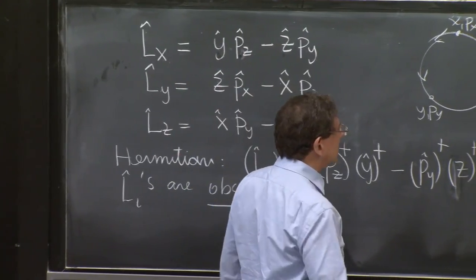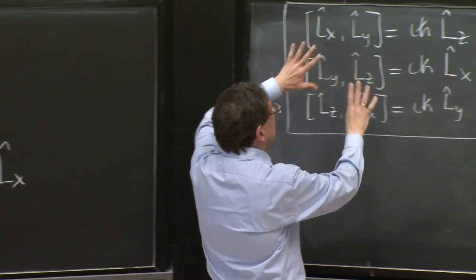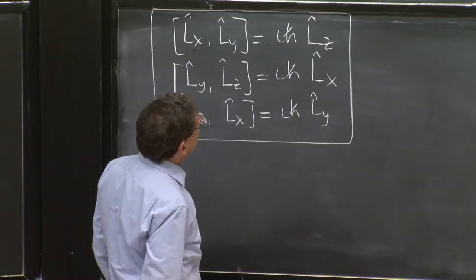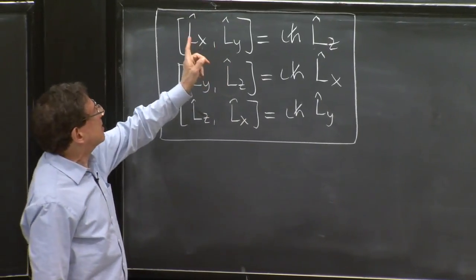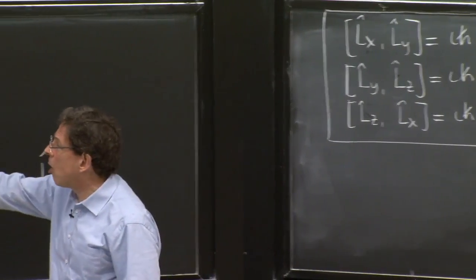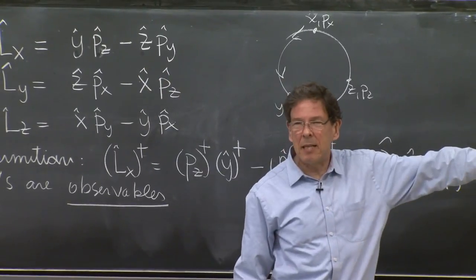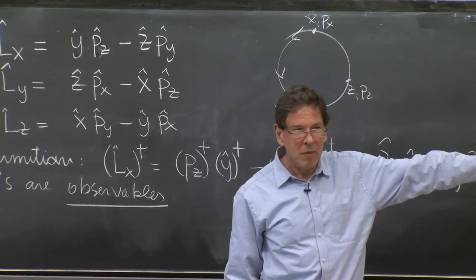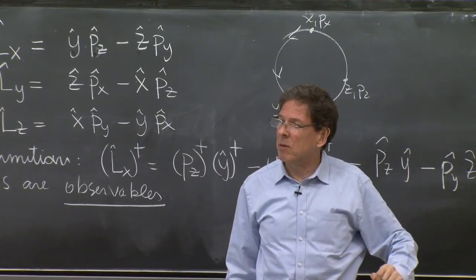Because we started with very concrete representation of l's in terms of y, p's, and all these things. But then they form a consistent unit by themselves. So sometimes there will be operators that satisfy these relations, and they don't come from x's and p's. But still they satisfy that. And that's what happens with spin angular momentum.